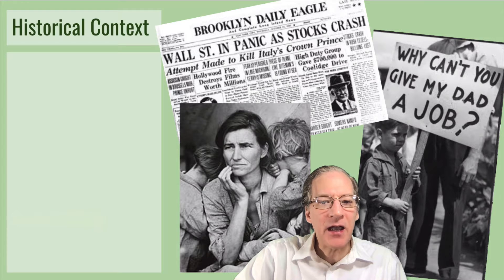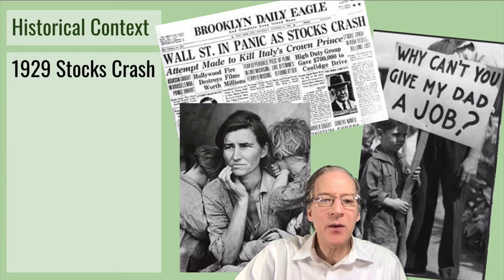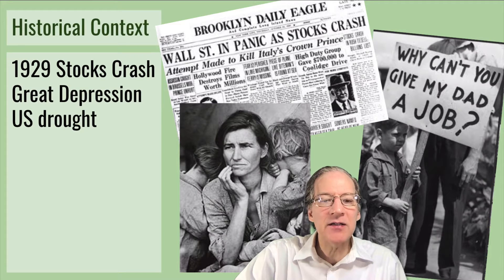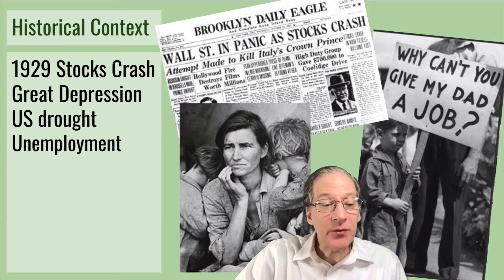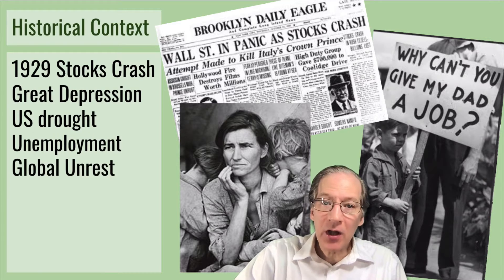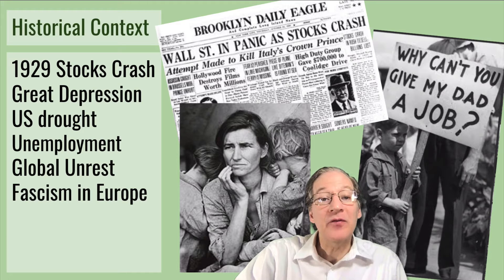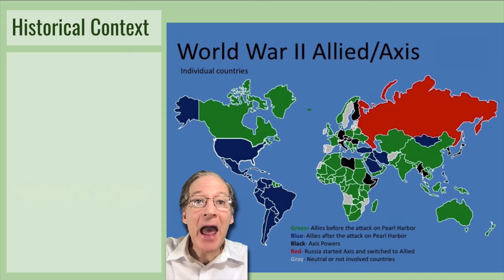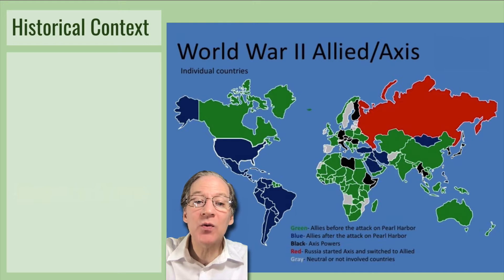In the next decade, in the 1930s, it starts with the stock crash — the stock market crashed in 1929. The Great Depression followed, and there was also a drought in the United States that added to the problem. Unemployment and global unrest, and the rise of fascism in Europe led directly into the 1940s and World War II.